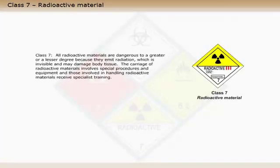Class 7: All radioactive materials are dangerous to a greater or lesser degree because they emit radiation, which is invisible and may damage body tissue. The carriage of radioactive materials involves special procedures and equipment, and those involved in handling radioactive materials receive specialist training.